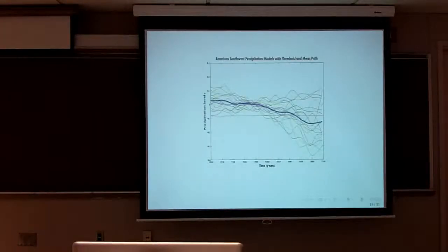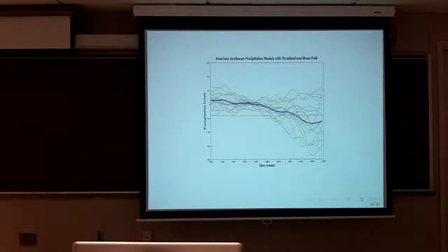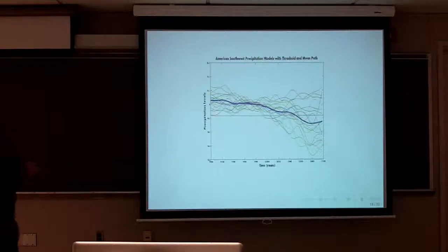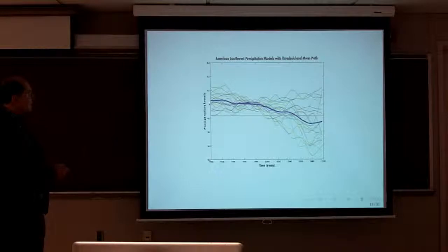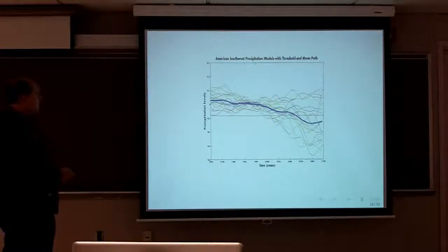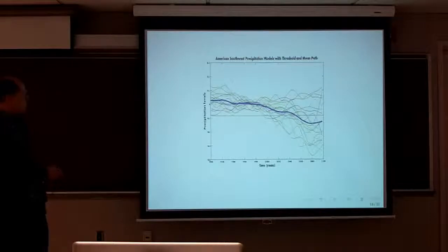So the next thing is, this is the picture of the American Southwest precipitation models. And this is the threshold. The threshold is when we go below .09. That's when we declare drought. And you see there are 19 models. Three of them never crossed the boundary. And this is the average path. So drought would be declared to exist in the Southwest around the year 2048, 2040, based on the average path.